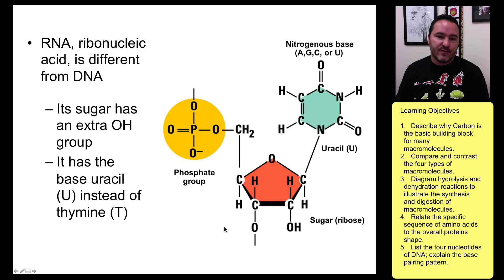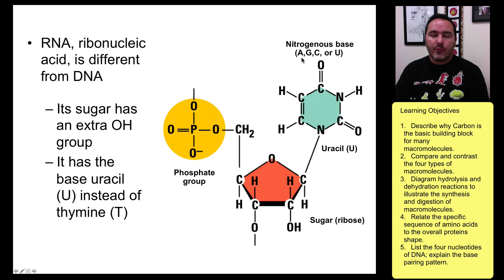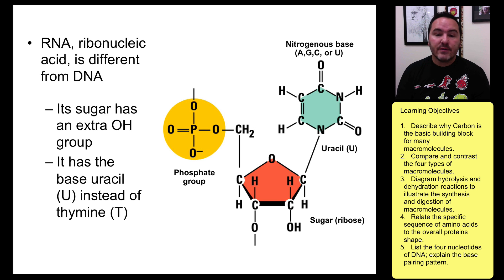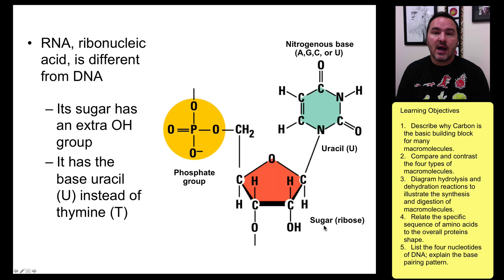In RNA, it's somewhat similar to DNA: you have a sugar, a phosphate group, and a nitrogenous base. Three of the bases are the same — A, G, and C — but RNA does not have T or thymine. Instead it has U, or uracil. The three differences are: one, RNA is single-stranded; two, RNA has a ribose sugar instead of a deoxyribose sugar; and three, RNA has uracil instead of thymine. And that's the end of the main macromolecules used in life.